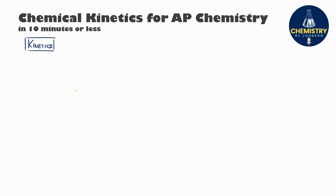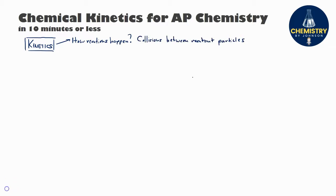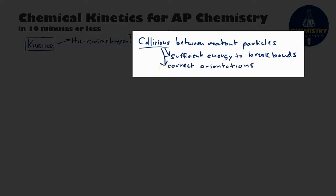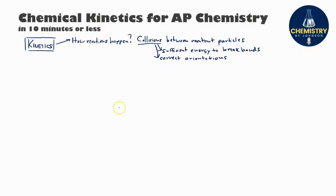When you think about chemical kinetics, two things should come to mind. The first is imagining how reactions happen on the atomic scale. Reactions happen when there are collisions between reactant particles. Those collisions not only have to happen, but they have to have sufficient energy to break bonds between the reactant particles, and the particles have to be pointed in the proper orientation when the collision happens.